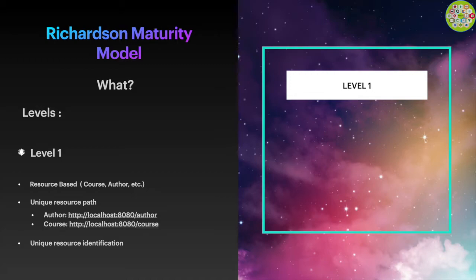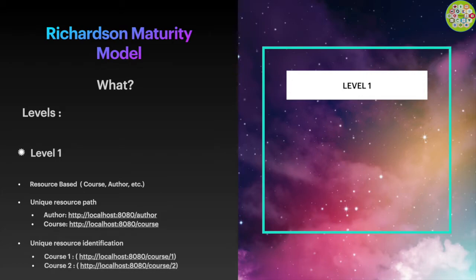To identify resources uniquely I can specify an ID for a specific resource. For example, I can give ID 1 to the REST API concepts course and ID 2 to the REST API implementation course. To identify the REST API concepts course I can use slash course slash 1, and for the REST API implementation course I can use slash course slash 2.